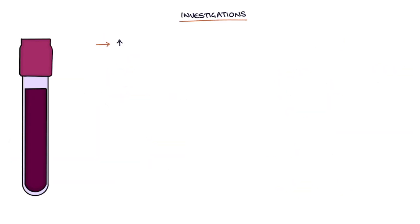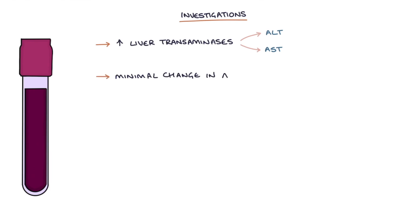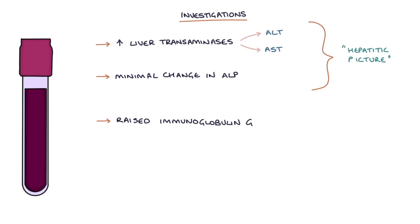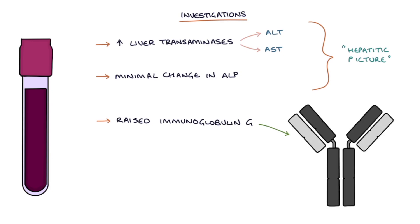Investigations will show high liver transaminases, which are ALT and AST, and minimal change in the ALP or alkaline phosphatase levels. This is described as a hepatitic picture. Raised immunoglobulin G, or IgG, levels are an important finding in autoimmune hepatitis.